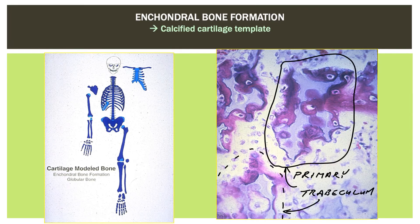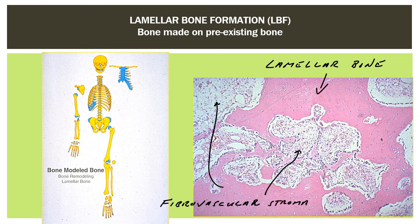Each zone of blue calcified cartilage surrounded by globular bone is termed a primary trabeculum. The adult skeleton is 100% lamellar bone deposited through the processes of bone modeling and remodeling. The resulting bone takes much longer to apply but is much stronger — bone arranged in a cable-like array, deposed in layers on pre-existing bone like individual layers in a sheet of plywood, each layer oriented at 90 degrees to its neighbor.